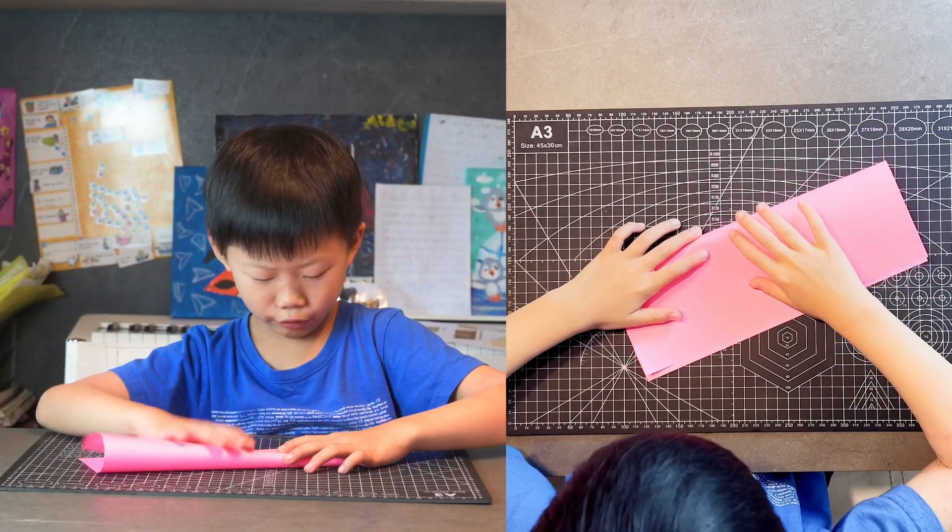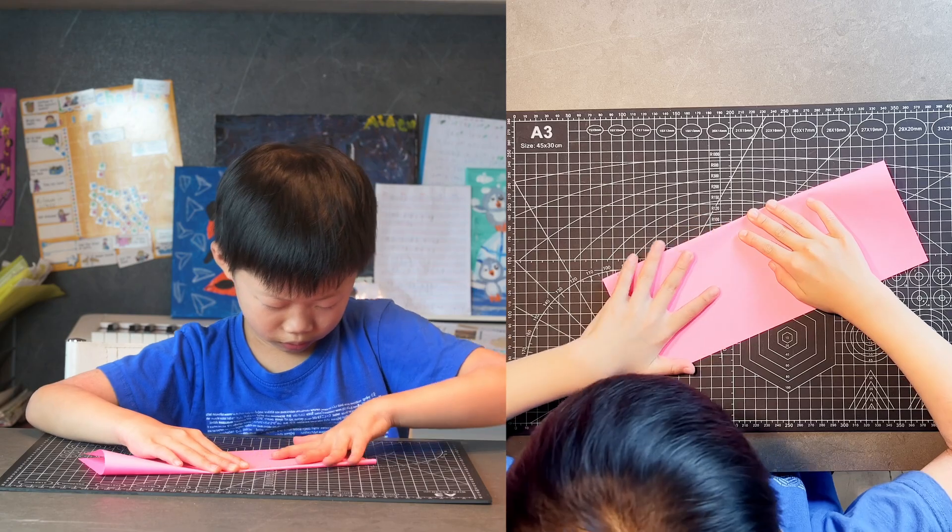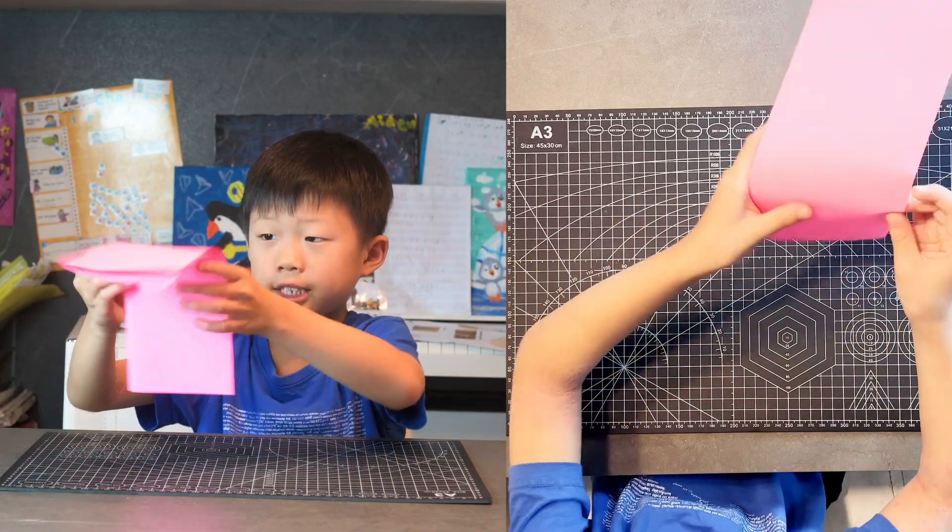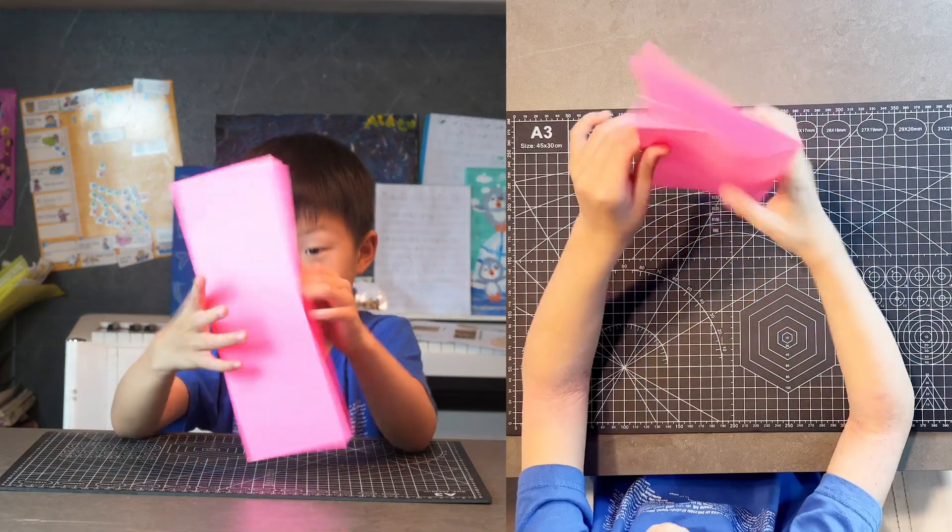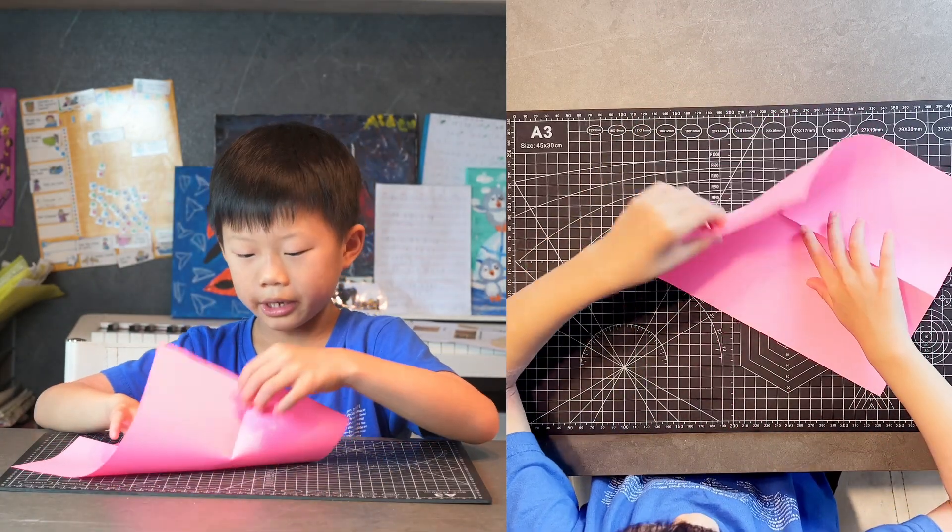First, put the right edge to the left. Open it back up as a mountain fold and then do the waterbomb base.